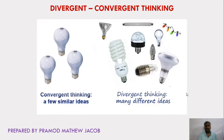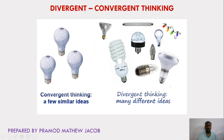Let's understand this with an example. If a designer is asked to design a lamp, in convergent thinking there will be only a few similar common ideas — the common shape or design of a bulb. Whereas in divergent thinking, the designer thinks about all possible different forms of bulbs that can be designed in different shapes, features, and textures. Each design has its own pros and cons. This is the role of divergent and convergent thinking in the design thinking process.